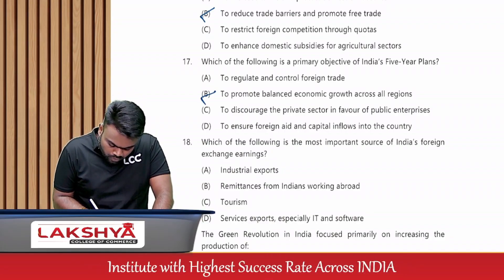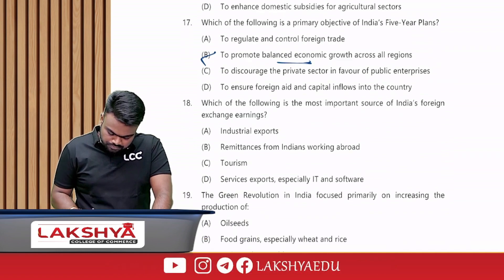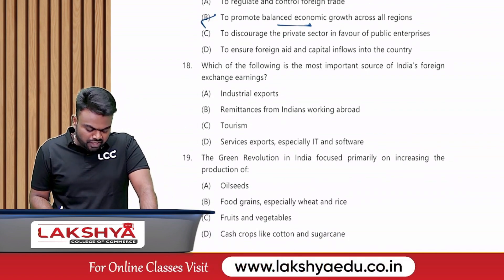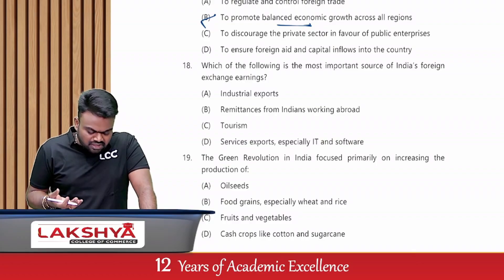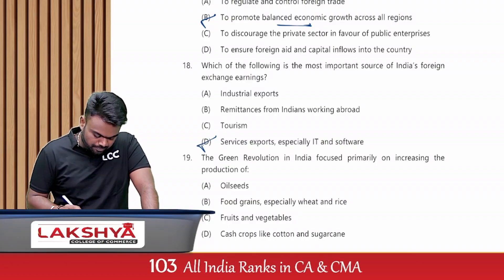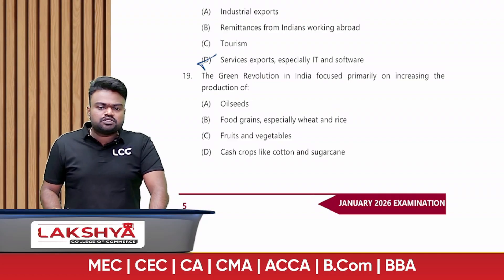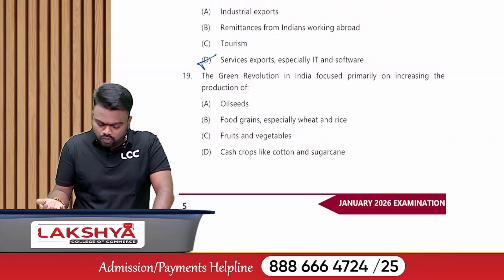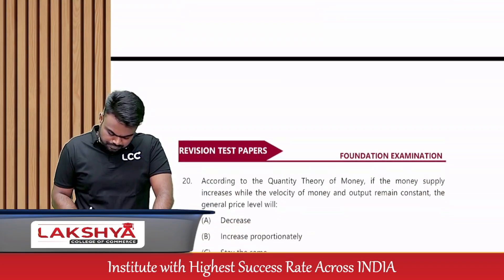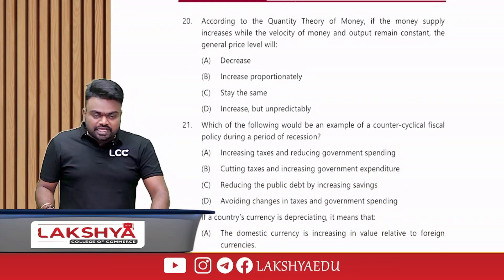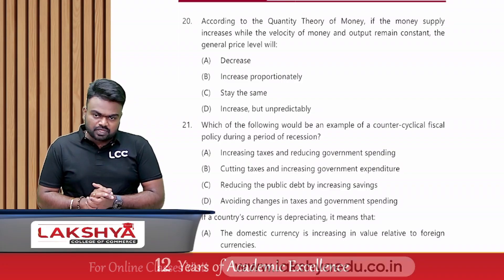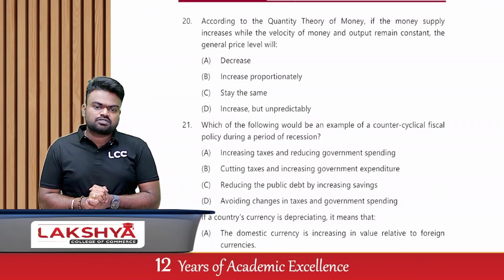The primary objective of India's Five Year Plans is to promote balanced economic growth — a direct question. The most important source of India's foreign exchange reserves: India is mainly exporting services, so the answer is option D. The Green Revolution in India focused primarily on food grains, especially wheat.